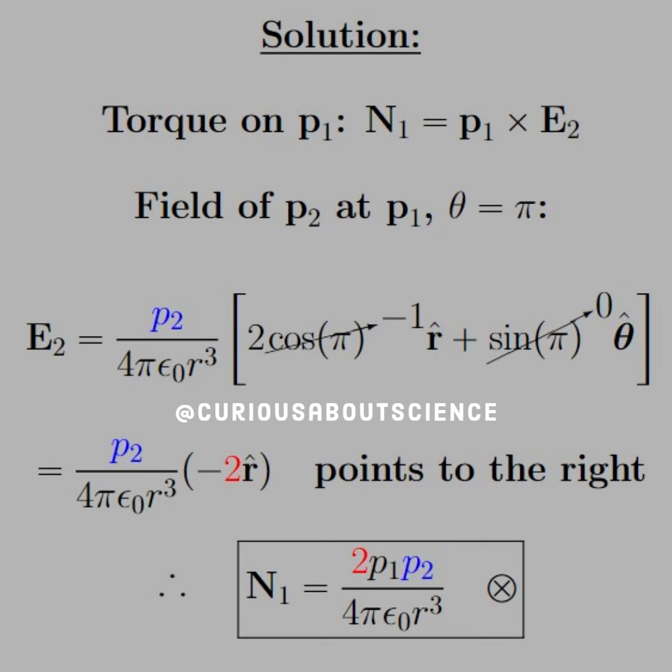This happens at an angle of theta equals pi. Plug that into the electric field formula and it simplifies down to P2 over 4 pi epsilon naught R cubed times negative two R hat. This simply means that it points to the right.